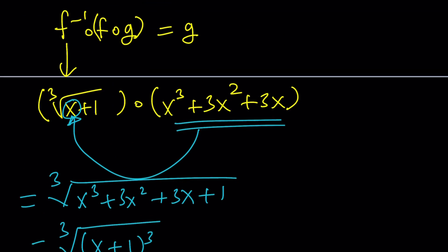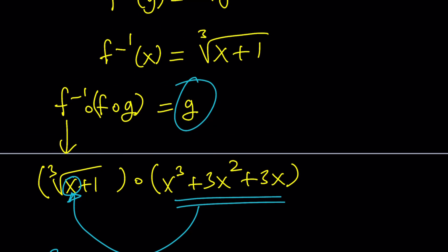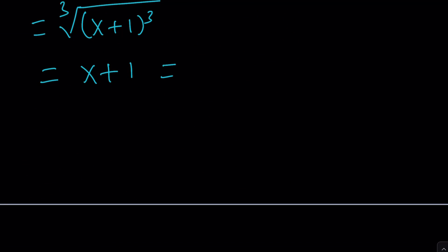Therefore, this was g, remember? So this would be g of x and we can basically write it as g of x equals x plus 1. So that will be the answer. That will be the first method.